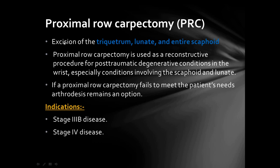Proximal row carpectomy involves excision of the triquetrum, lunate, and entire scaphoid while the pisiform is left behind. It is used as a reconstructive procedure for post-traumatic degenerative conditions involving the scaphoid and lunate. If proximal row carpectomy fails, wrist arthroplasty is an option. It is indicated in Stage 3B and Stage 4 disease.